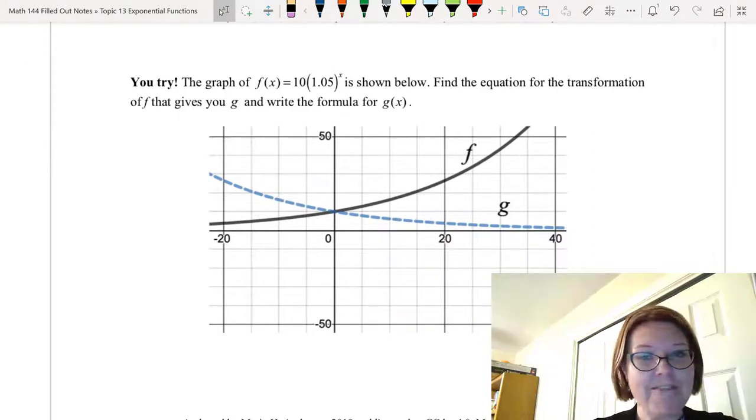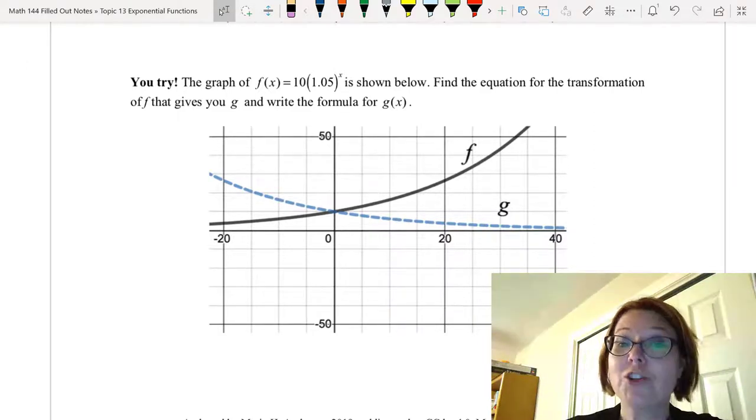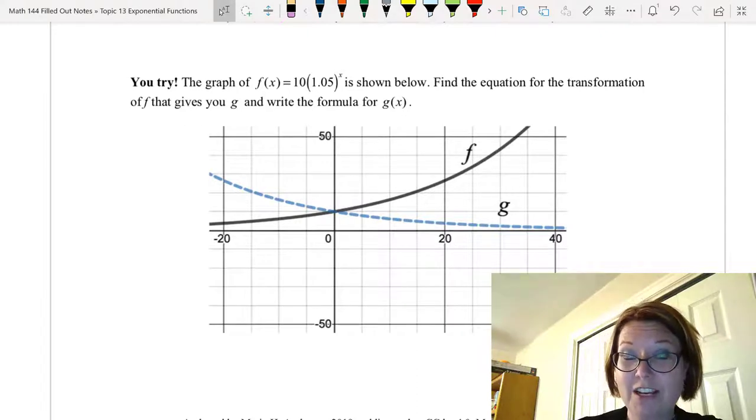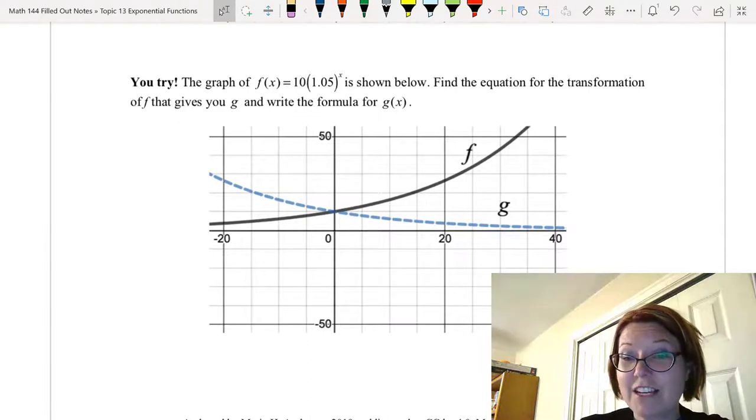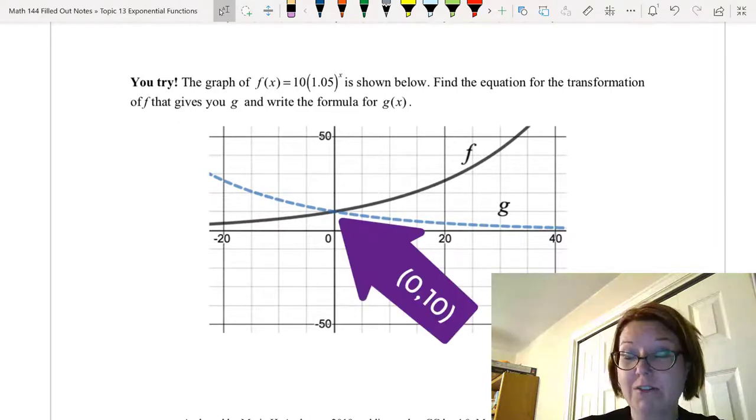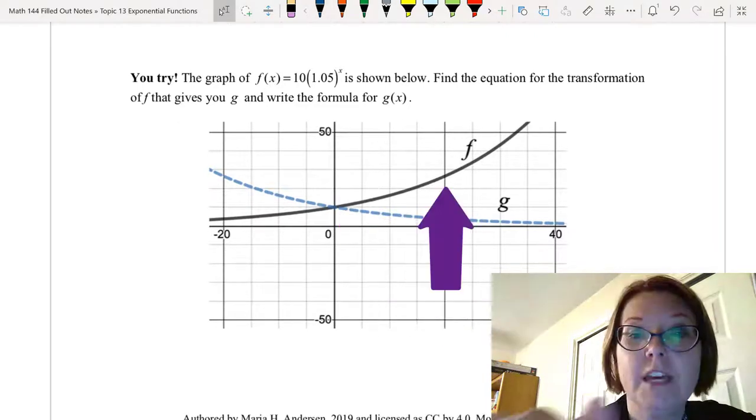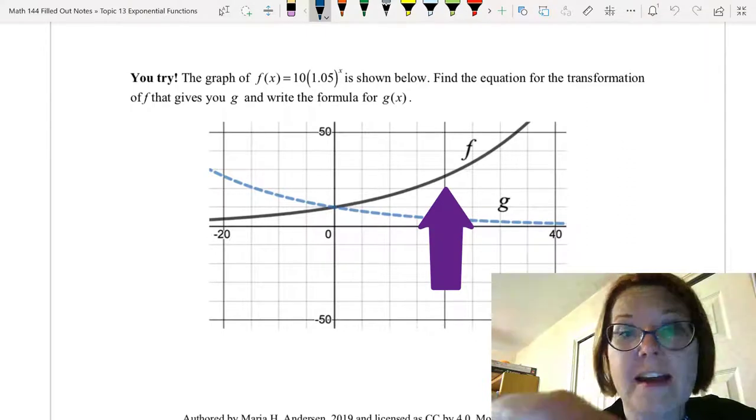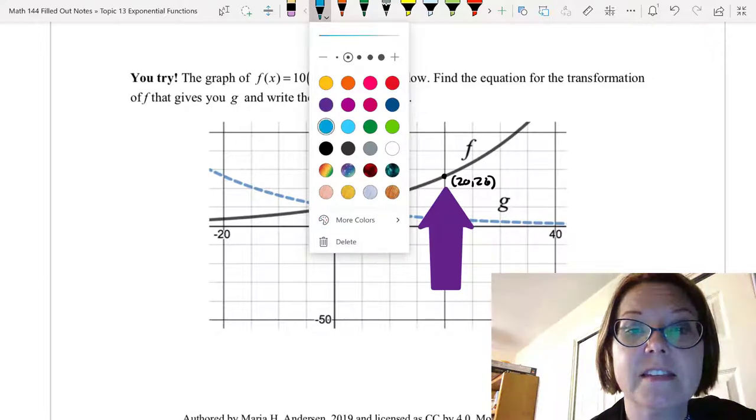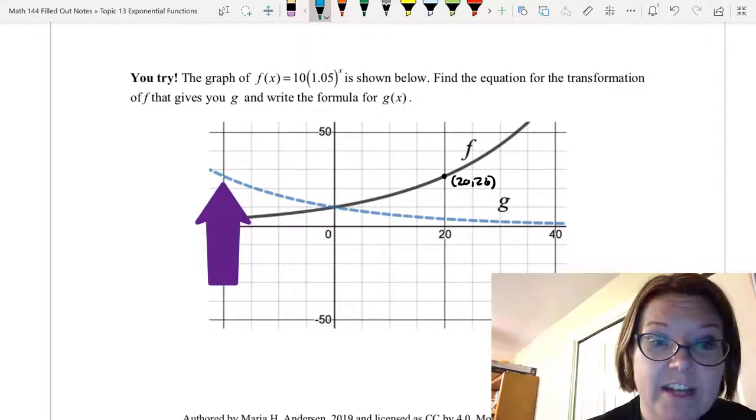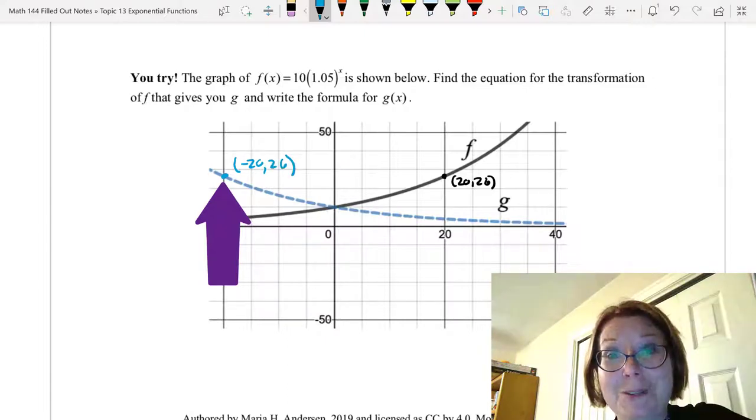All right now your turn. It's the same graph of f of x shown below and a transformation that gives you g. Now I'll just describe g and then let you give it a try. In this case g is a decreasing graph. It goes through the same y-intercept as f of 0 comma 10 and we said that f had a point at 20 comma 26. It looks like in this case g has a graph at negative 20 comma 26. So pause the video and give this one a try.